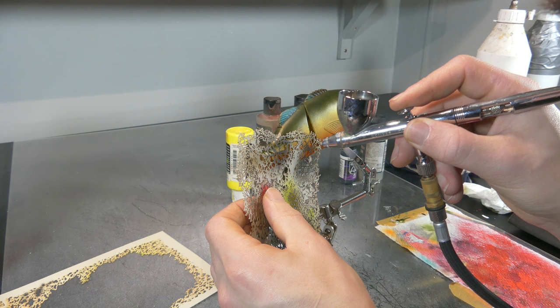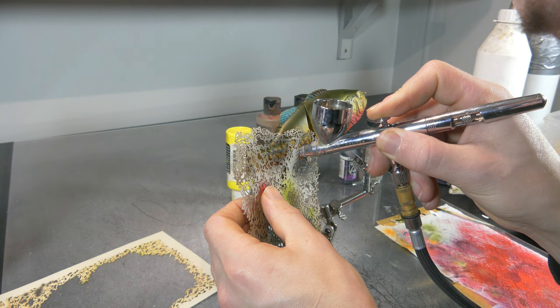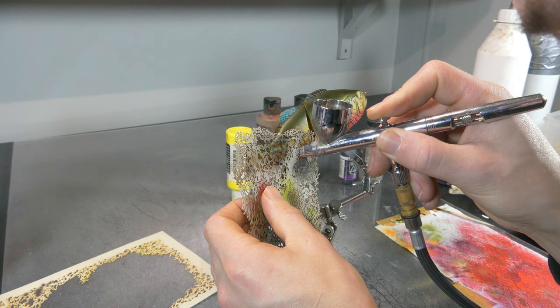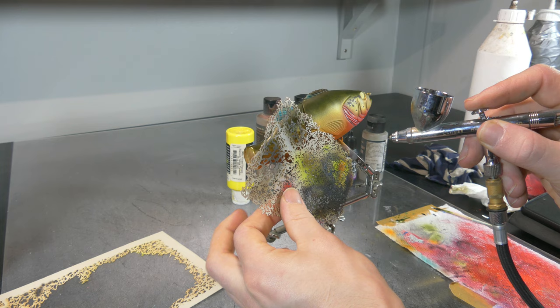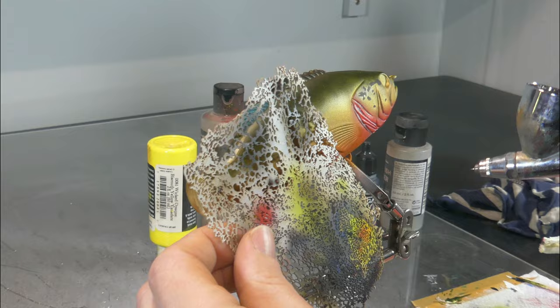Now if you would look up reference pictures for a peacock bass, then you will see that there are a lot of different color schemes. Some of them have no spots on the body and others have a lot of spots, so I went for something in between.